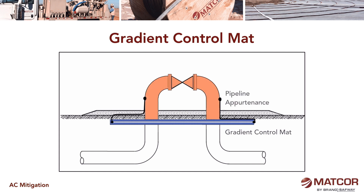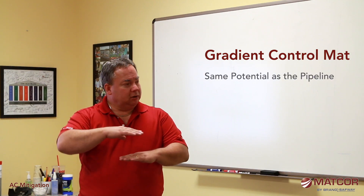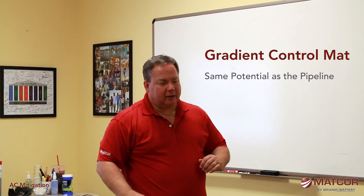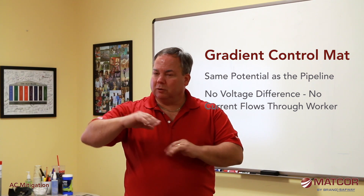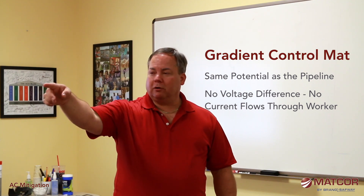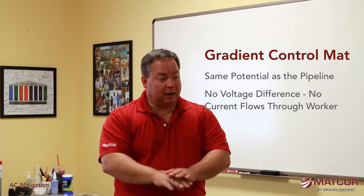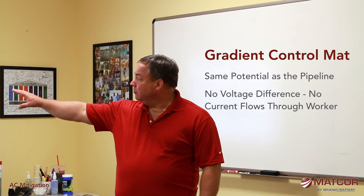A gradient control mat is a simple device connected to the pipeline at an appurtenance where someone can touch it, extending out around that appurtenance enough so that somebody standing on it is not within the step potential. Because it's connected to the pipeline, the whole gradient control mat is at the same potential as the pipe. As soon as I step onto that gradient control mat, I don't have a voltage difference between me and everything else — even if I touch the pipe, the ground below me is also at the same voltage as the pipe, so no current will flow through my body.